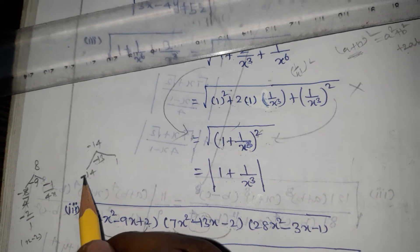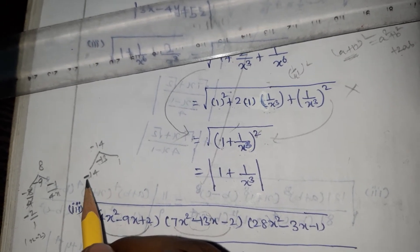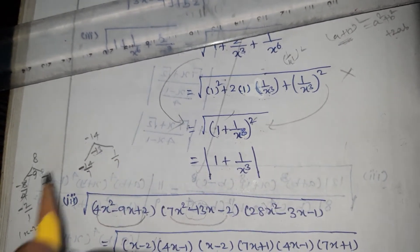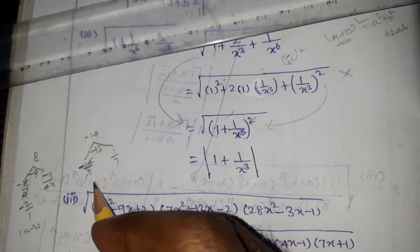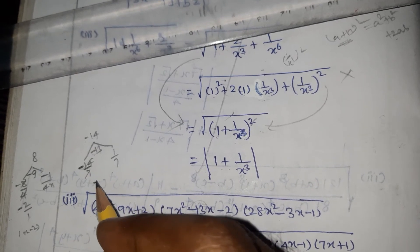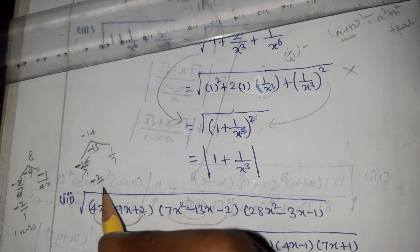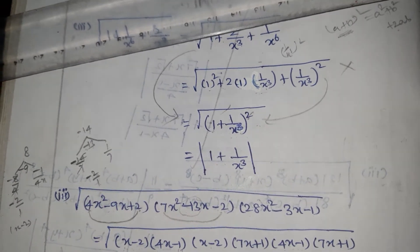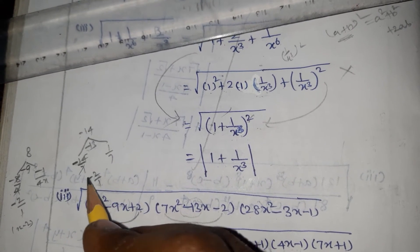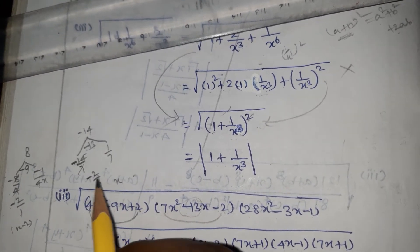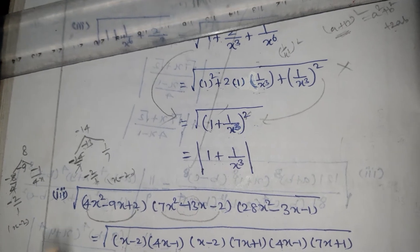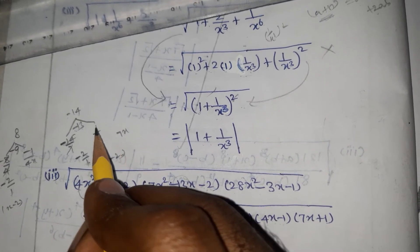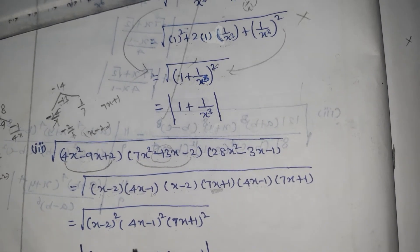The x squared coefficient is 7, so we divide by 7. Canceling, we get x minus 2 as one factor and 7x plus 1 as the other factor. So 7x squared minus 13x minus 2 factorizes as x minus 2 into 7x plus 1.